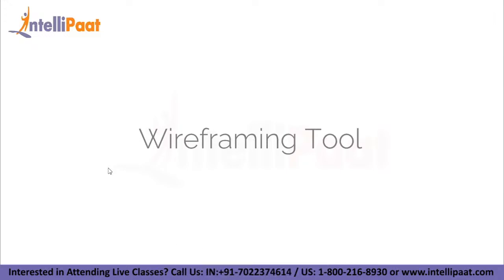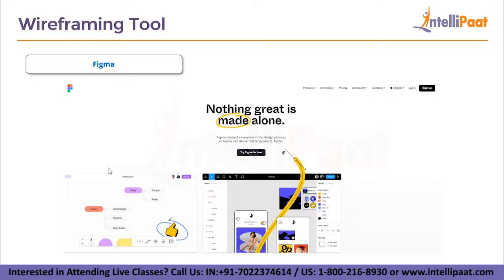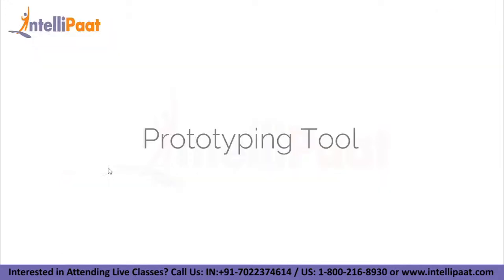Next we have the wireframing tool. A wireframe is a bare-bones blueprint of a design mapping out the basic layout of a digital interface. Wireframes depict where different elements will sit on the page and are usually devoid of any color or visual design input. Wireframing tools enable you to quickly create these blueprints, usually with drag and drop functionalities. The industry standard tool used here is Figma — a browser-based tool with component-based wireframing kits and drag and drop interface, allowing you to easily insert, customize and organize interface elements.